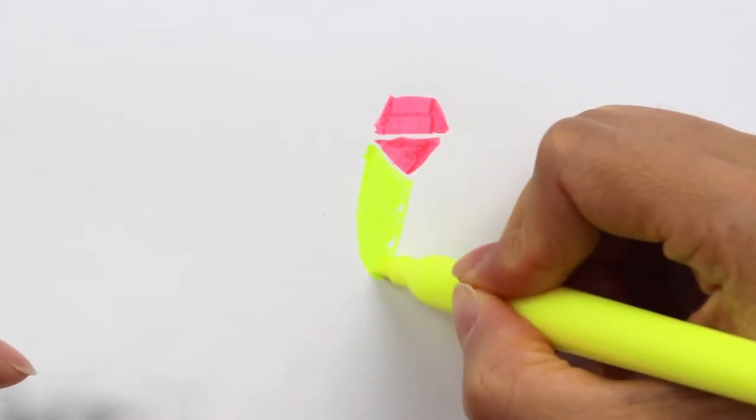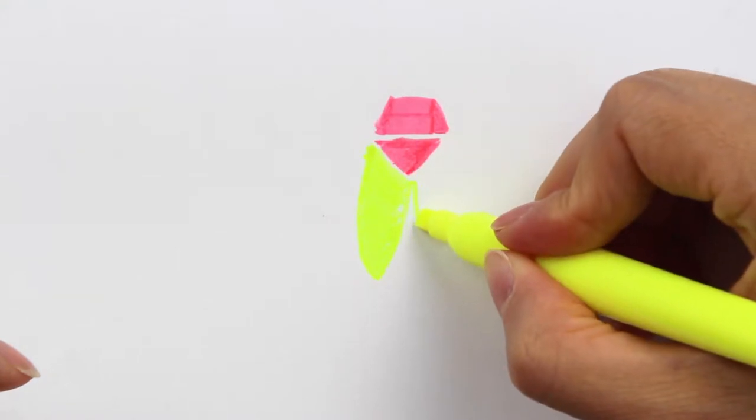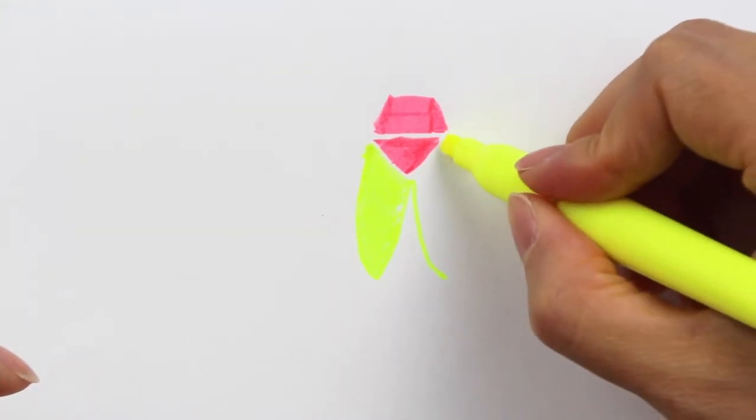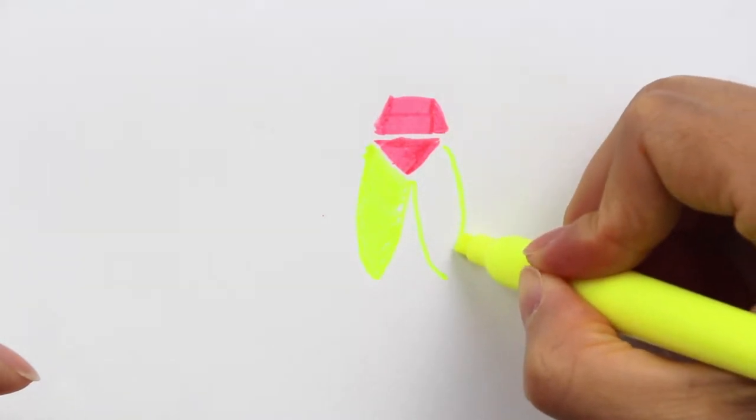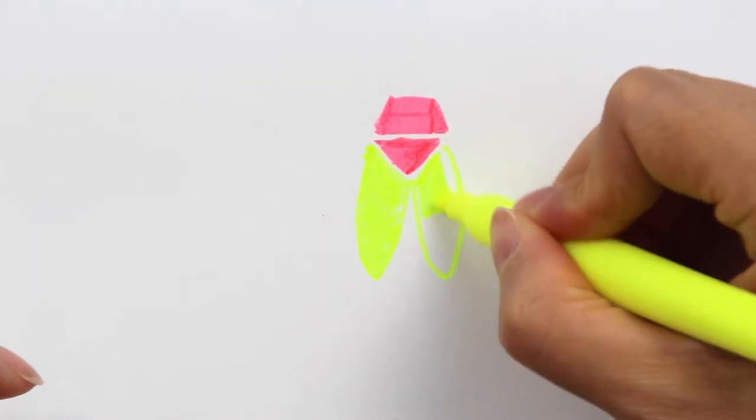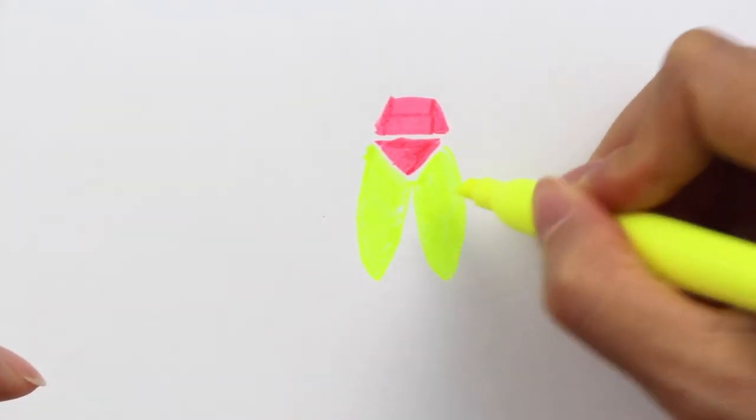You can also add this part with a little curved line going out, and this part a little curved coming inside. Fill them up with the same color. This is the color base for the cicada.